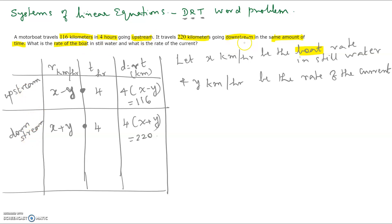Upstream means the boat is traveling against the current; downstream means the boat is traveling along with the current. When the boat travels against the current, the two rates are not favorable to each other, so the two rates need to be subtracted. When going downstream, because the boat goes along with the current, one rate is favorable to the other, so it speeds up the process, giving us x plus y.